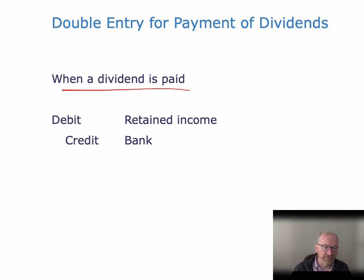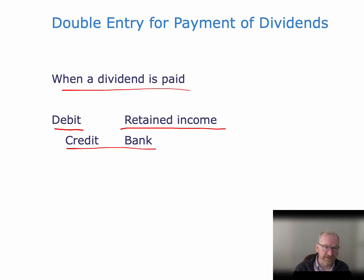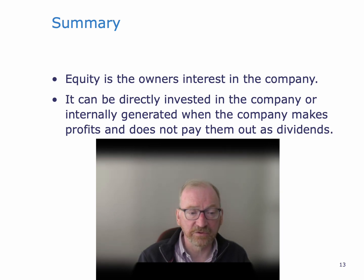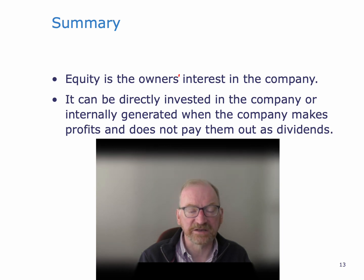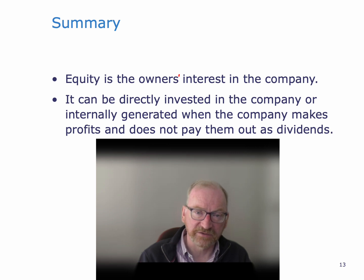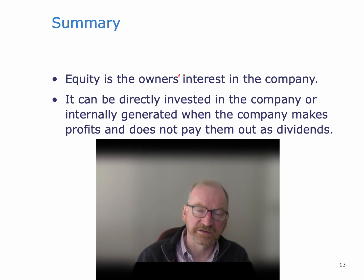To summarize: equity is the owners' interest in the company. It can be directly invested in the company or internally generated when the company makes profits and does not pay them out as dividends. We've looked at the double entries for issuing new capital and paying dividends on existing shares. Thank you for watching — remember to like and subscribe if you found this content helpful.